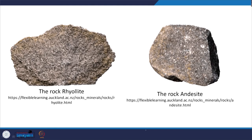Rhyolite is an extrusive igneous rock. Due to its high silica content, rhyolite lava is very viscous — it flows slowly like toothpaste squeezed from a tube and tends to pile up and form lava domes. If rhyolite magma is gas-rich, it can erupt explosively, forming a frothy solidified magma called pumice along with ash deposits.